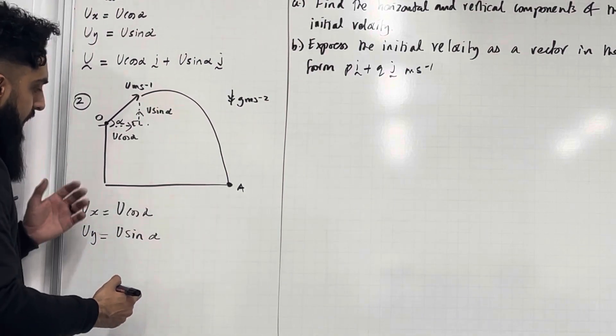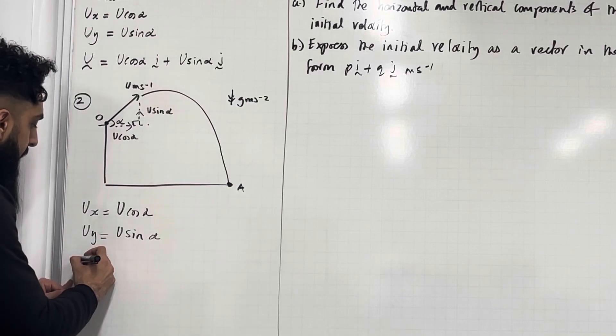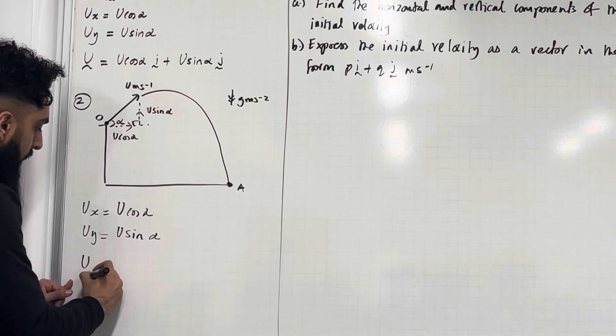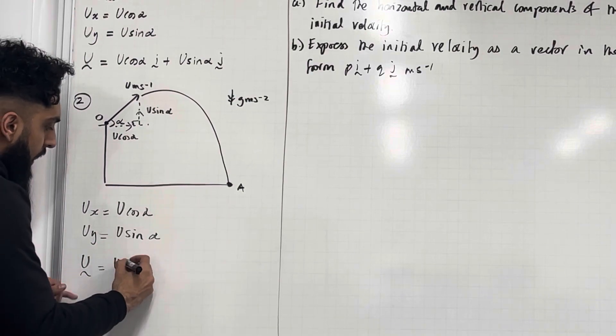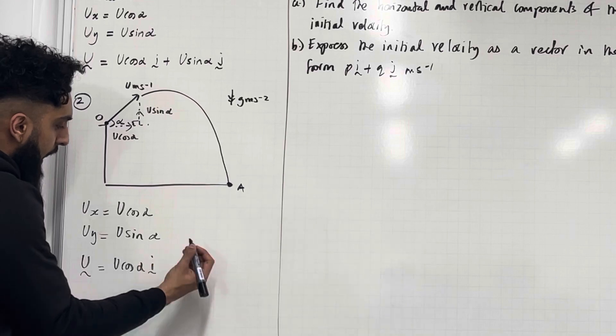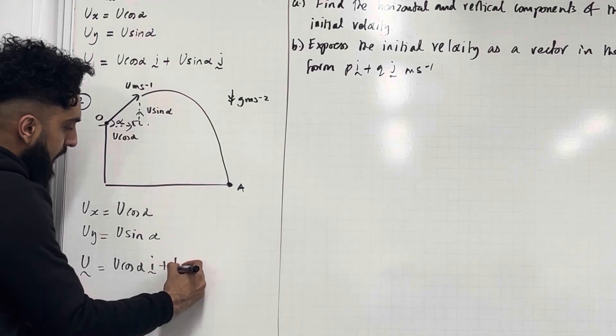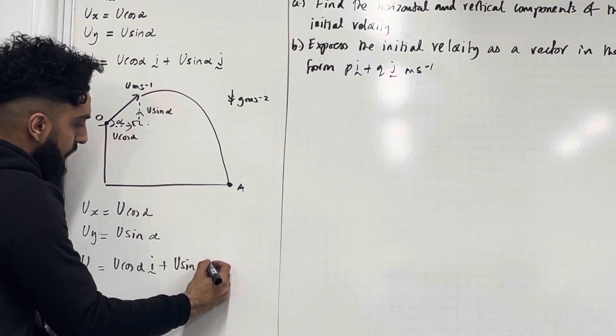The initial velocity can be written as a vector: u = u cos alpha i plus u sin alpha j.